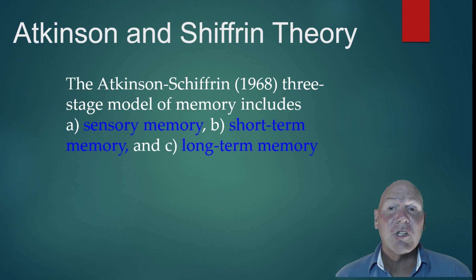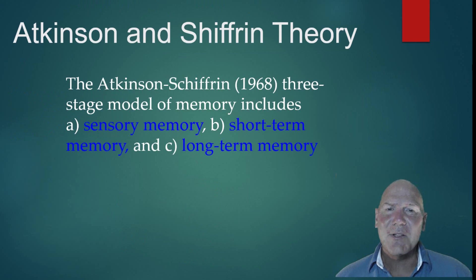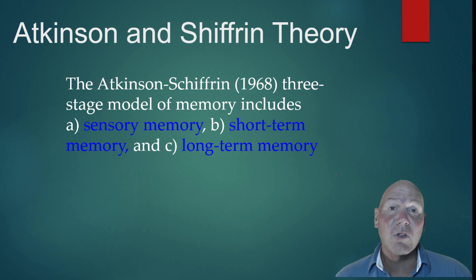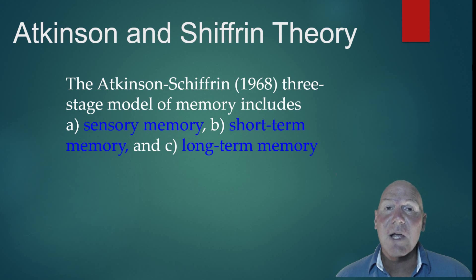We look first at the Atkinson and Shiffrin three-stage model. It includes what we call sensory memory, which is all the stuff we gather through our senses — our sight, sound, what we feel, how we remember those things. Then we store it into short-term memory, which means it's there for a short period of time. And then, of course, we go further into long-term memory, where we store it for hours, sometimes a lifetime.